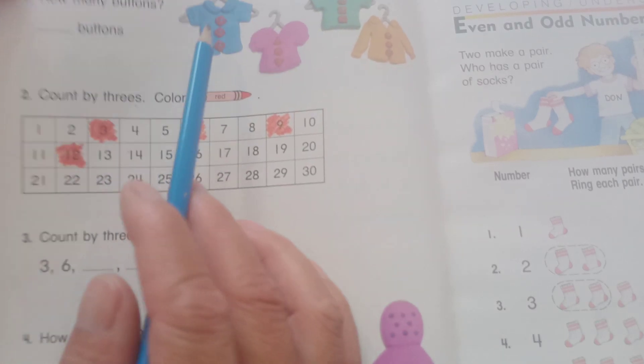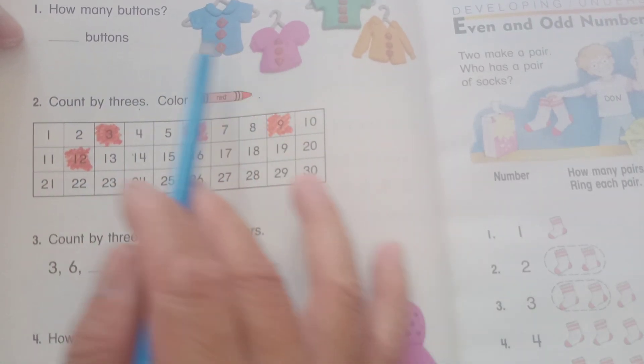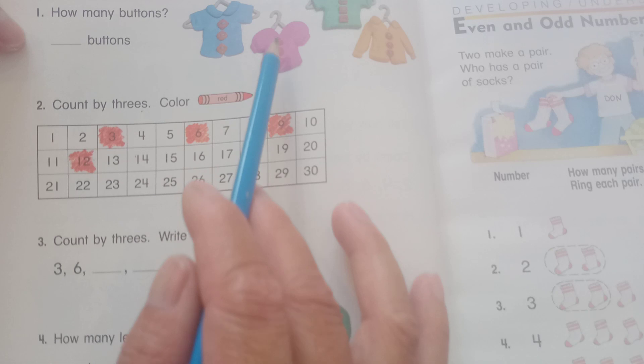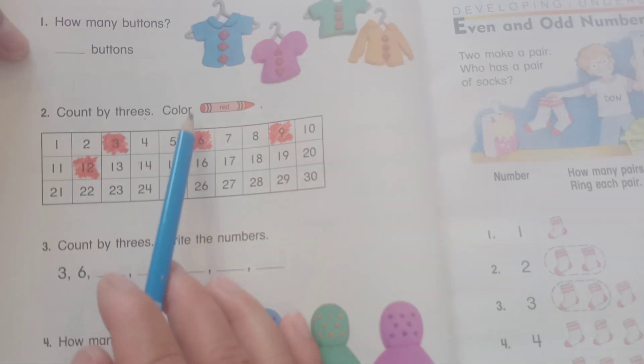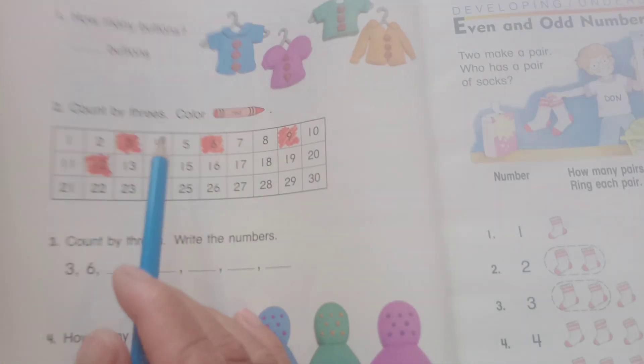One, how many buttons? Yes, how many buttons? One, two, three. One, two, three. One, two, three and four. Twelve buttons. Okay, so now.